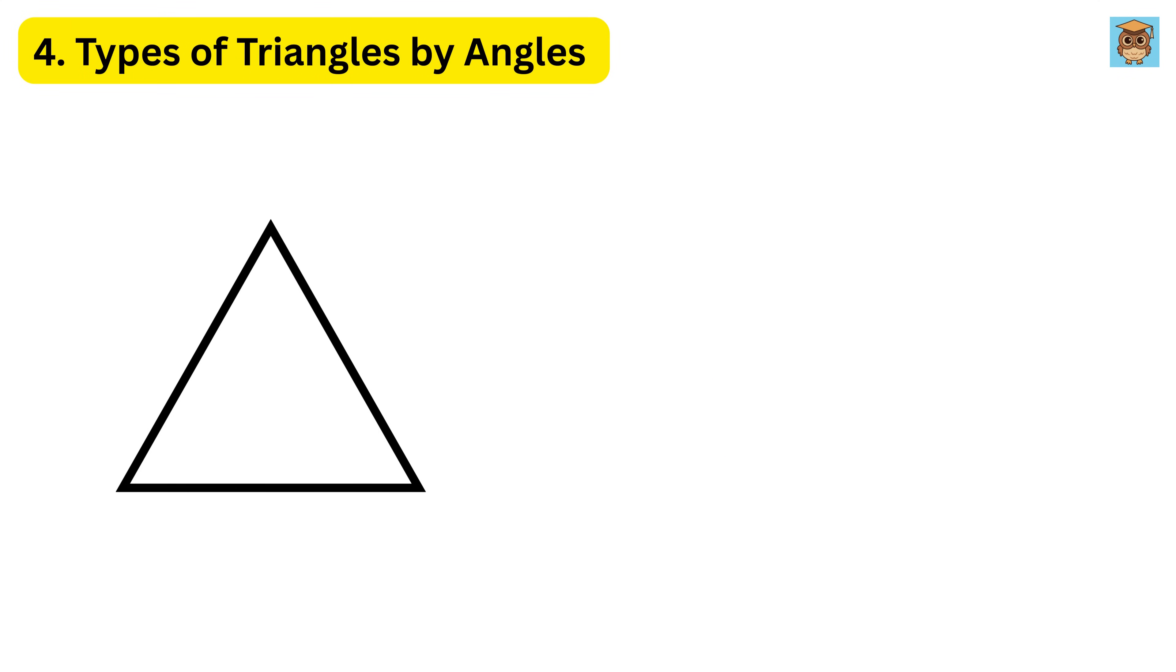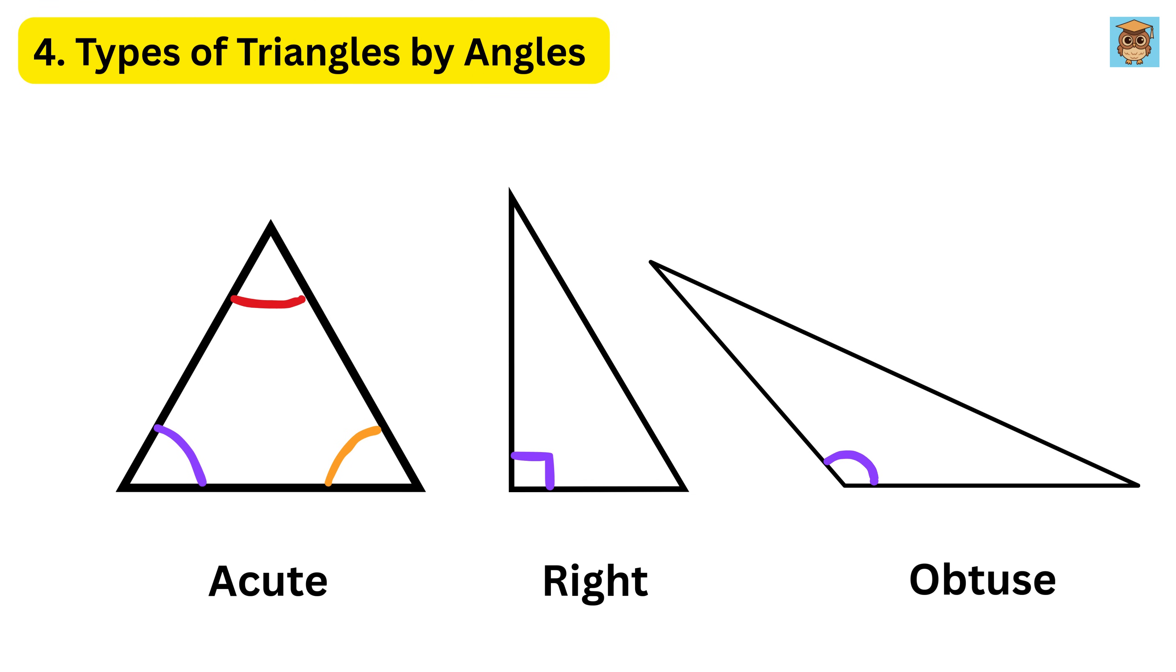4. Types of Triangles by Angles. Triangles can also be grouped based on their angles. If all three angles are less than 90 degrees, it is called an acute triangle. If one angle is exactly 90 degrees, it is called a right triangle. If one angle is more than 90 degrees, it is called an obtuse triangle.